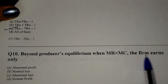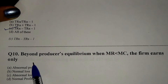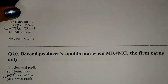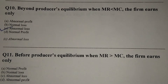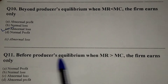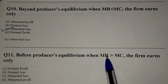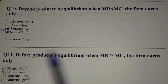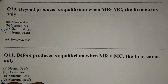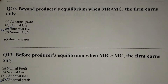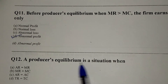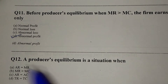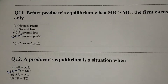The MR of any nth unit is given by option C: TR(n) minus TR(n-1). Beyond the producer's equilibrium, when MR is less than MC, the firm earns only abnormal losses — option C. Before the producer's equilibrium, when MR is greater than MC, the firm earns only abnormal profits. The producer's equilibrium is a situation when MR equals MC — option B.